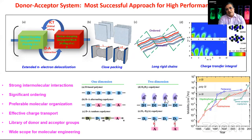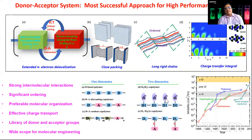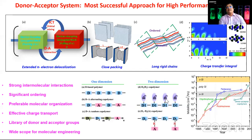My background is more in synthesis and we do exciting material work. For making high performance transistors, we combine electron donating and electron accepting units. This donor-acceptor approach enables close pi-pi stacking because of donor-acceptor interaction, which overlaps the orbitals. This pi-pi stacking is directly proportional to charge carrier mobility, and high mobility is really critical and important for this technology to be used in various applications.